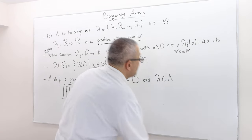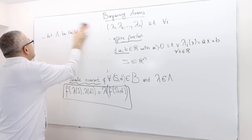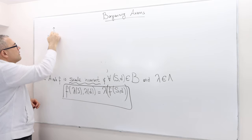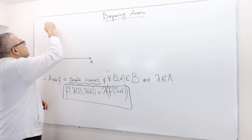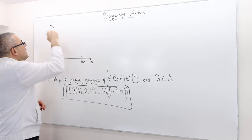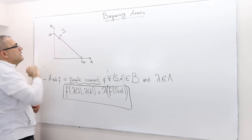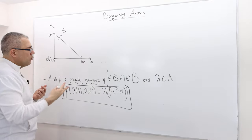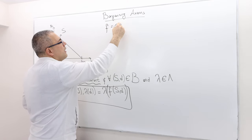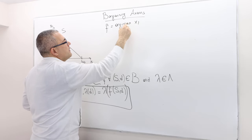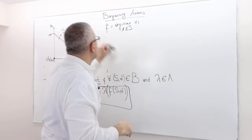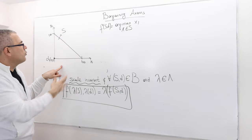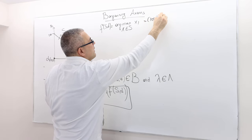Example — my candidate is the buyer-seller example from the very first lecture. I have player 1 (buyer) and player 2 (seller), with payoff coordinates x₁ and x₂, and the feasible set S has maximum at (100, 100), with disagreement point d = (0, 0). The rule I'm using is f = argmax x₁ over x in S — so the solution is going to be (100, 0): player 1 gets 100, player 2 gets 0. That rule favors player 1.